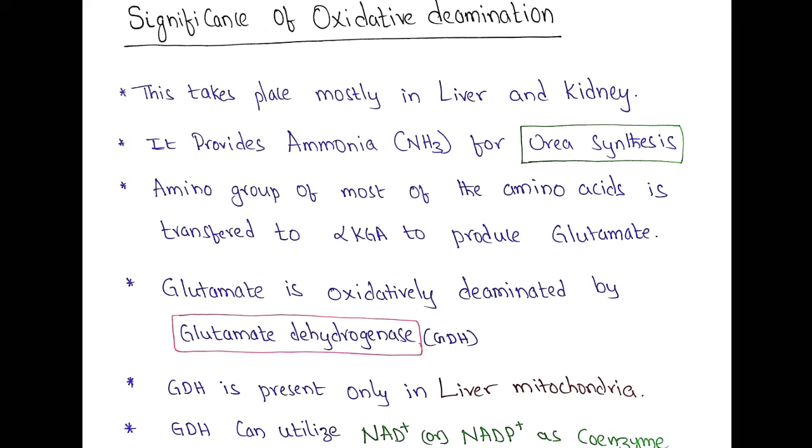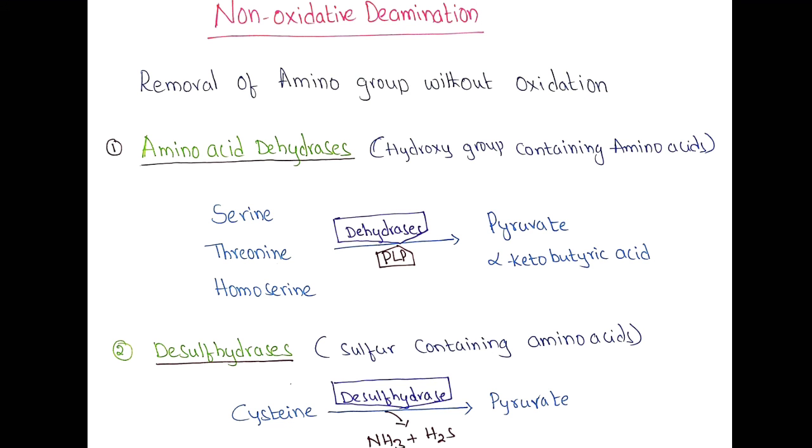Significance of oxidative deamination is it mainly takes place in the liver and to some extent in kidney. When you see there are two nitrogens in the urea, one of them is supplied by this deamination. Glutamate dehydrogenase is present only in the liver and it can utilize NAD or NADP as the coenzyme.